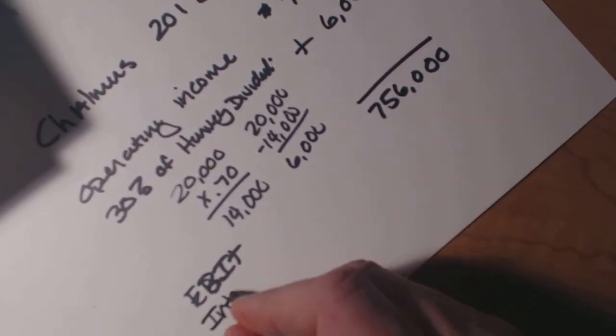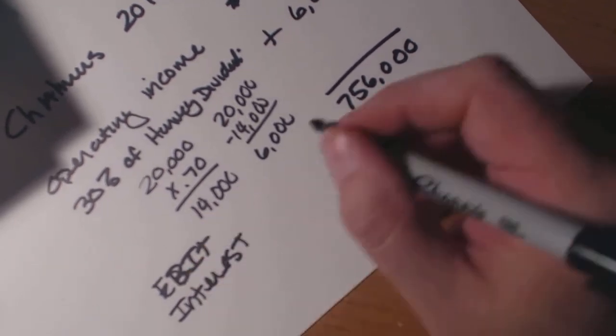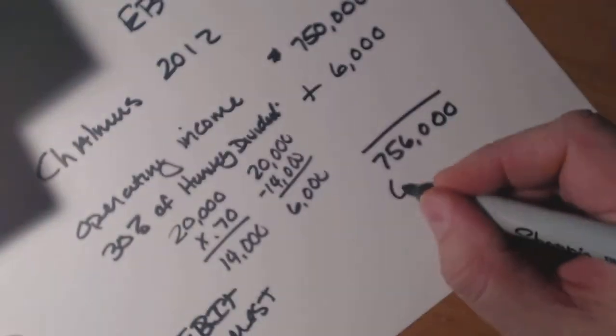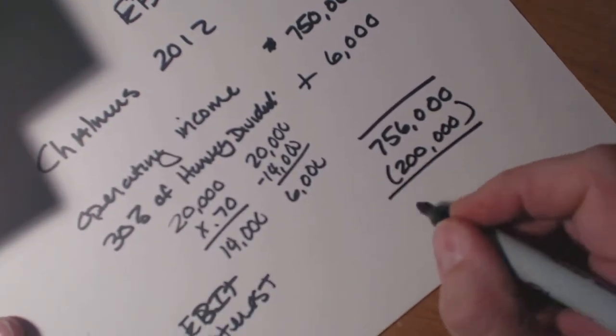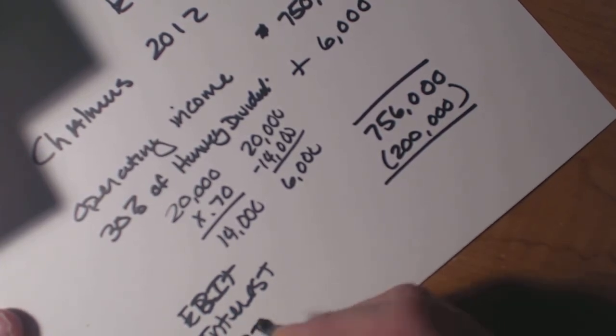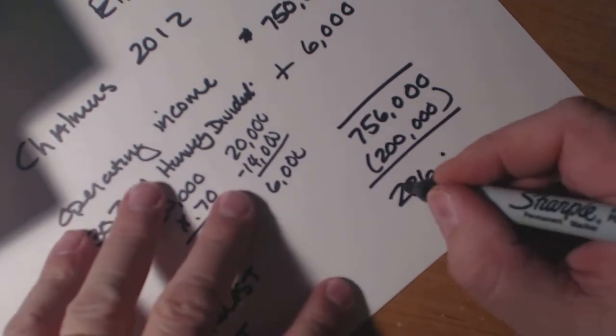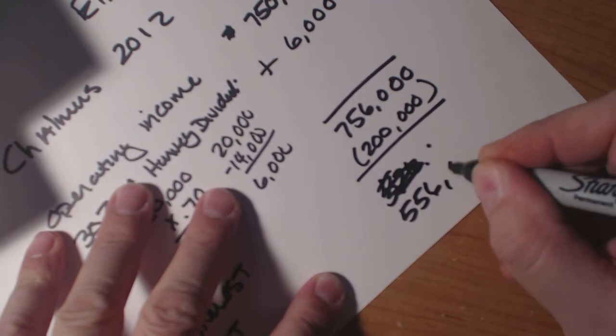Well, all we're going to do is we're going to take out the interest. Now, the interest that we earned, as if we go back, was $200,000. So we're going to put that in parentheses so that it comes out. And then, at this point, the EBIT is $556,000.